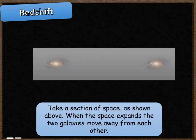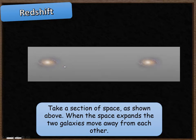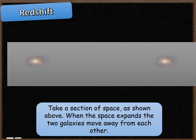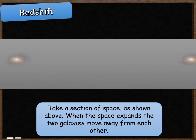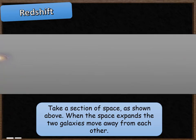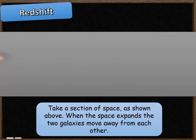We're going to take one section of space now and watch what happens to it as it expands. The section of space is shown in grey so you can see it quite clearly, and in this section of space there are two galaxies. Watch what happens as the space gets larger: space gets bigger, and the two galaxies move away from each other — not because the galaxies are moving, but because the space itself is expanding.